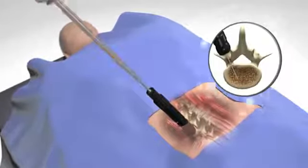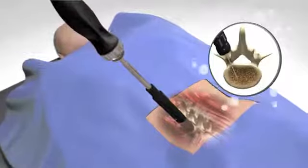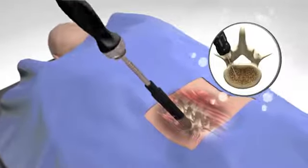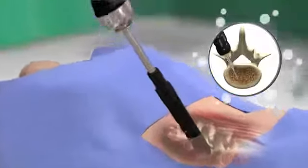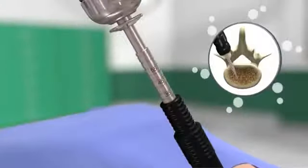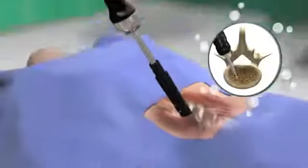Tapping the pedicle can now take place if desired. The advancement of the tap will occur through dilator three. Approximate screw length can be determined by looking at the screw length indicator at the proximal end of the cap.